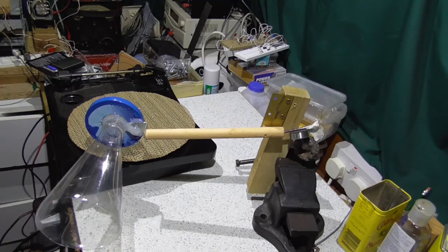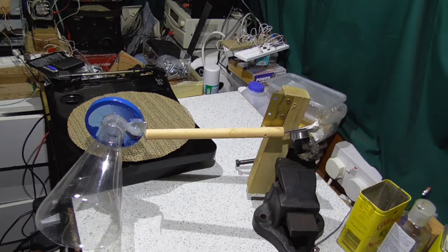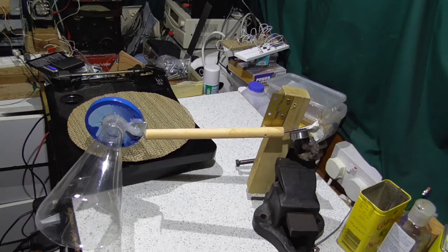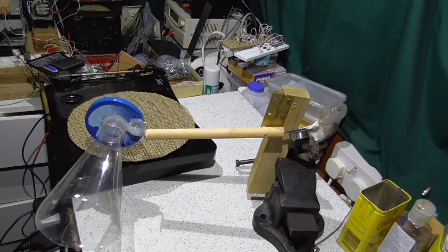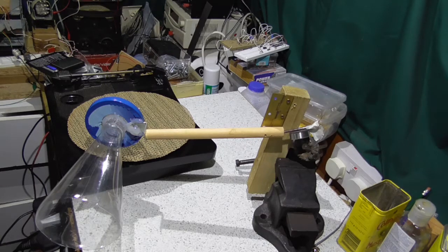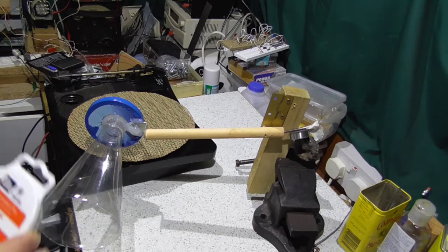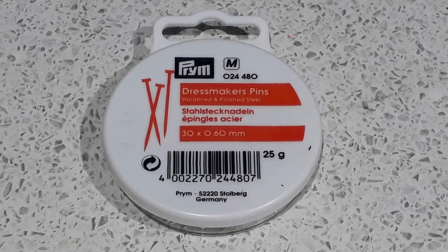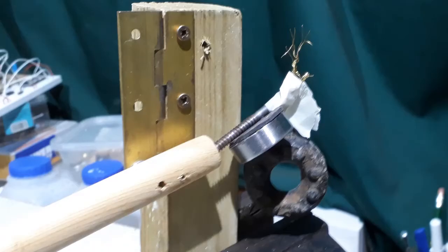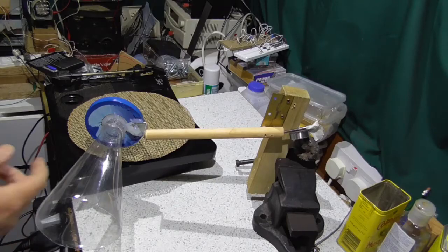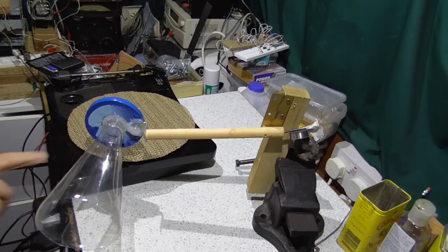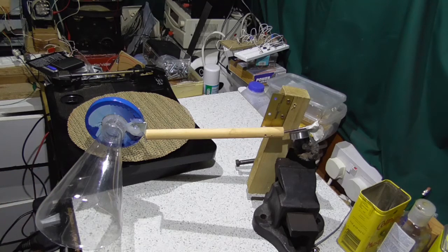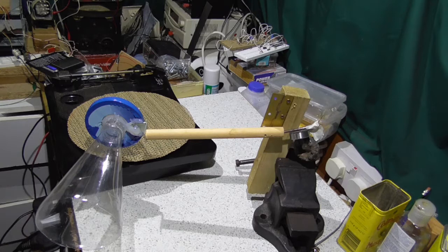Now this works fine on traditional shellac or bakelite gramophone records, but I wanted to give it a go playing vinyl records. So using some dressmaker pins instead of gramophone needles and also some counterweight there, this is now set up using an old iron turntable to play a 45 rpm single.